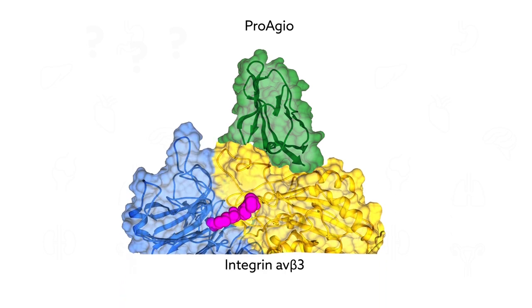Created from a human protein, ProAgyos selectively targets a cell surface receptor called Integrin alpha-V beta-3.